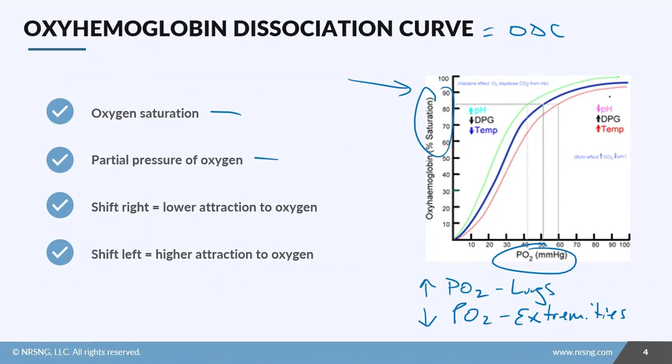Areas of low partial pressure of oxygen are like the extremities. This curve—the first thing I want you to look at is that the curve actually at some point plateaus, and it's usually somewhere in here. What that means is even if you increase the partial pressure of oxygen, you're not going to get any more saturation on the hemoglobin molecules. The blue line is a normal curve.